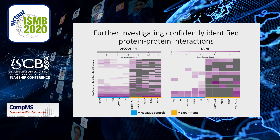We were curious about the spectral count of the confidently identified interactions and how they compare to what was seen in the controls. The grey cells in our heat maps represent preys that were not detected in a given experiment. Overall, we see that Decode PPI is more sensitive than SAINT, as it identifies more interactions as confident. However, its specificity could be improved as it identifies a large number of spurious interactions that are abundant in the controls.